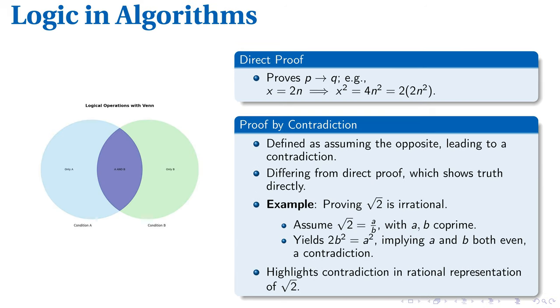Let's now delve into the realms of direct proof and proof by contradiction. Direct proof verifies a proposition's truth value directly. To illustrate, if x equals 2n, straightforwardly substituting x into the equation results in x squared equals 4n squared, or 2 times 2n squared. This validates the initial proposition via direct substitution and computation.